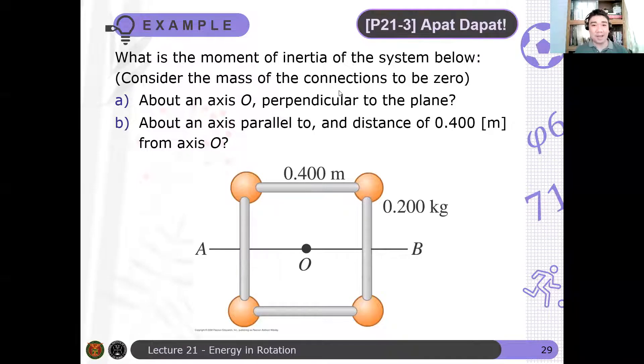Let's have another example. What is the moment of inertia of the given system? So we have here four masses that are connected by massless rods. Assuming that these rods are massless, what is the moment of inertia about the axis O and about an axis parallel to O, but at a distance of about 0.4 meters?